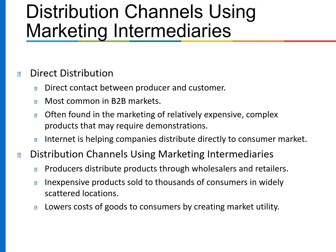Direct channels are often found in the marketing of relatively expensive, complex products that require demonstration. The internet is helping companies distribute directly to the consumer market. Producers distribute products to wholesalers and retailers for inexpensive products sold to thousands of consumers in widely scattered locations, lowering the cost of goods to consumers by creating market utility.